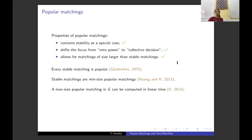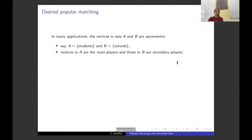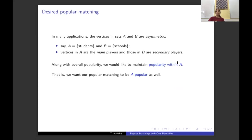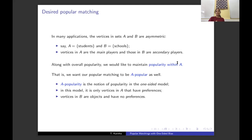A maximum size popular matching can also be computed in linear time. Here we consider a new notion of what is a desired popular matching. The definition of popularity treats all vertices uniformly; however, in many applications, vertices on one side of the bipartite graph are the main vertices — more important or active. For example, in matching students to schools, students are the main players and schools are secondary. So, along with overall popularity, we would like to give vertices in A more importance — we want our popular matching to also be A-popular. This is the notion of popularity in the one-sided model, where only vertices in A have preferences and vertices in B are objects with no preferences.